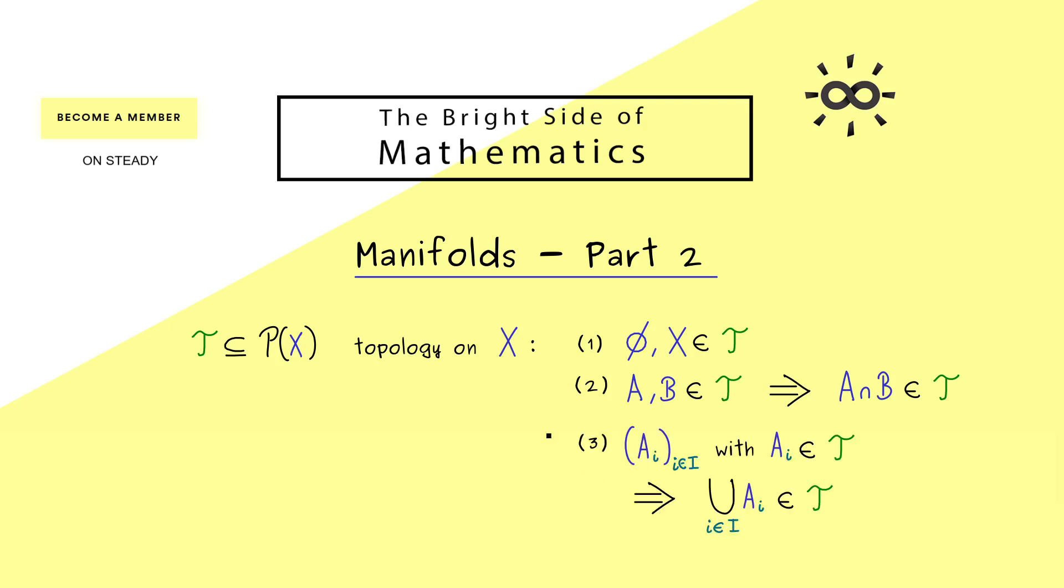And thirdly, you also cannot leave it with any unions. So these are the three properties of a topology T, and you also should remember that the elements of T are called open sets. Moreover, the set X together with the chosen topology is called a topological space.